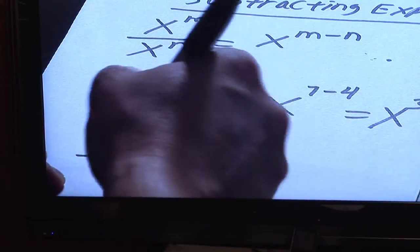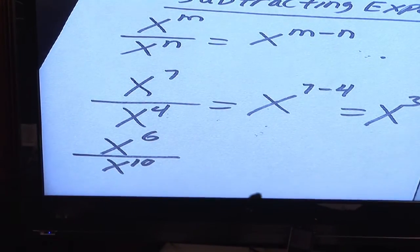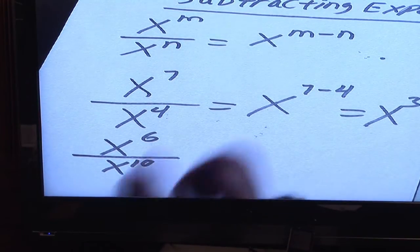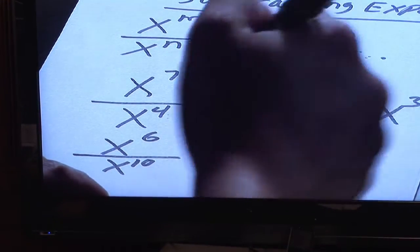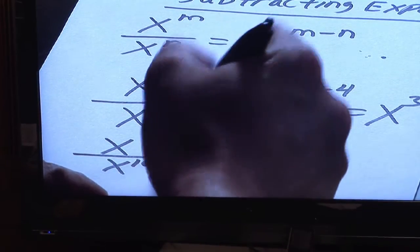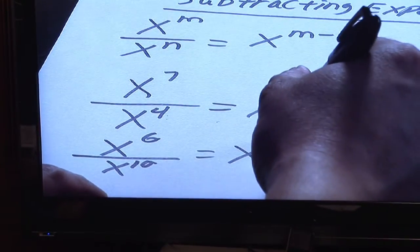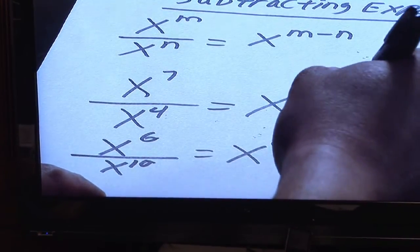Suppose you have x to the sixth over x to the tenth. You have the exact same idea because you will take the top exponent and you'll subtract by the bottom exponent, so you have x to the sixth minus ten.